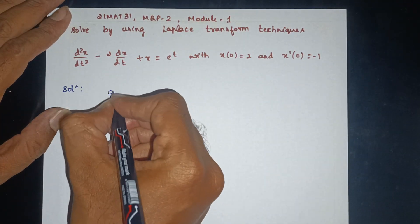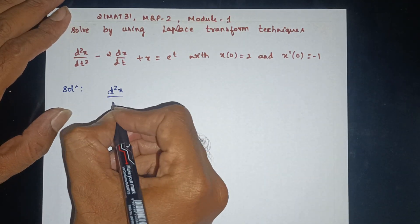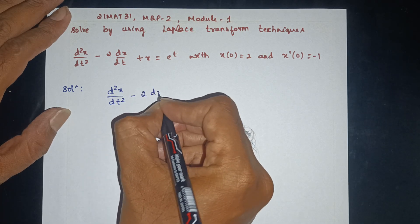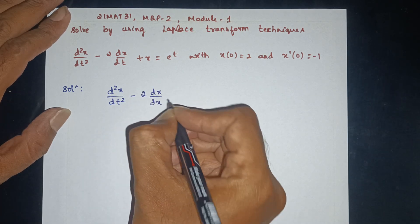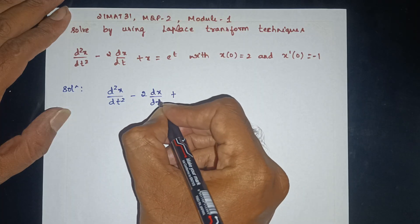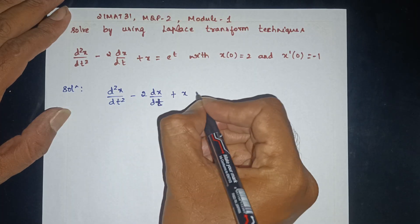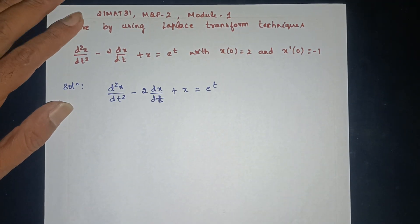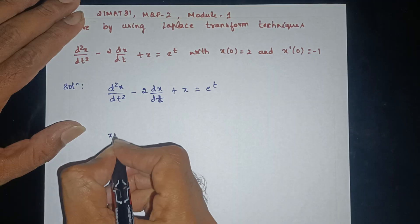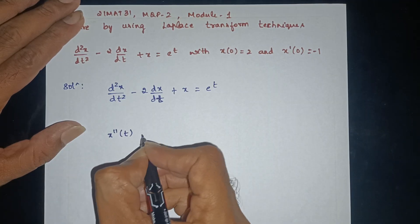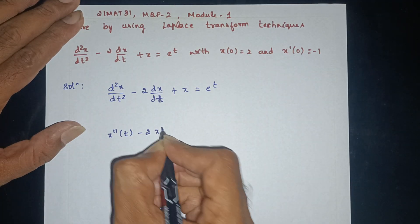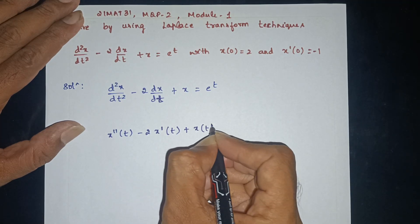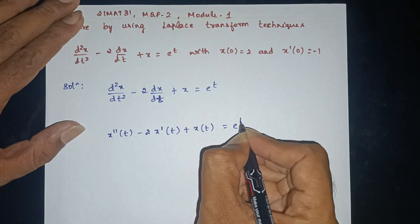First, this is d²x/dt² minus 2 times dx/dt plus x is equal to e^(4t). Here x double dash denotes d²x/dt², x dash of t denotes dx/dt, and x denotes x of t, all equal to e^(4t).